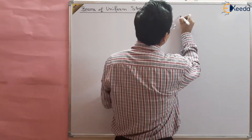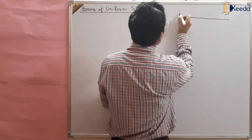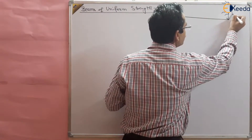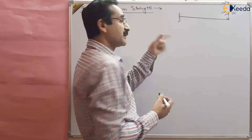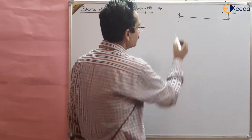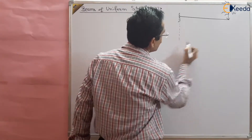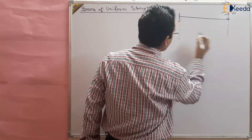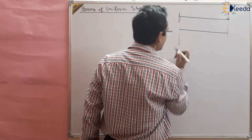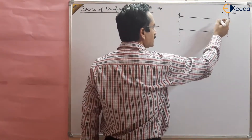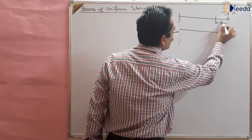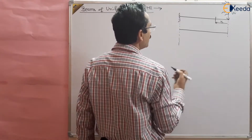Suppose we have a cantilever beam like this. Let us draw the bending moment diagram of this cantilever beam with a point load. What will be the bending moment diagram? We have already studied this in the chapter of shear force and bending moment diagrams. Cut the section at a distance x and find out the bending moment.